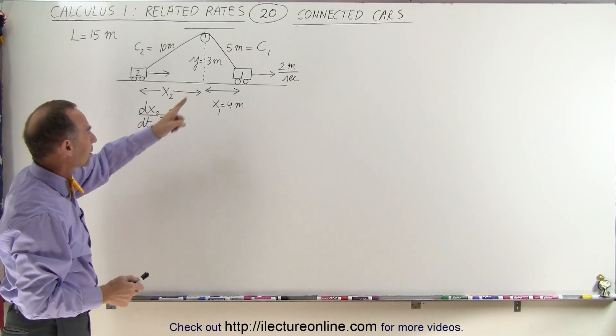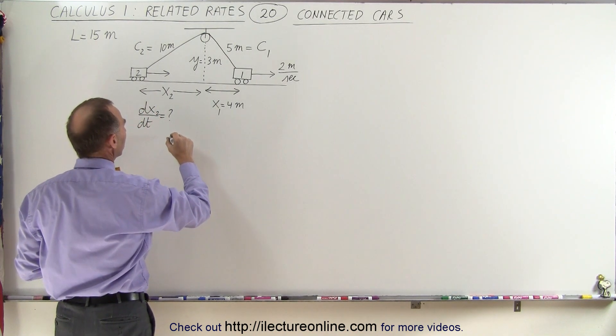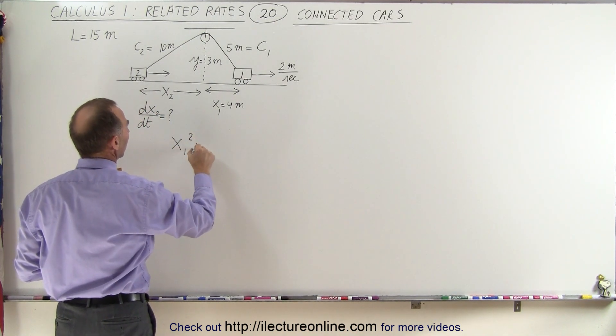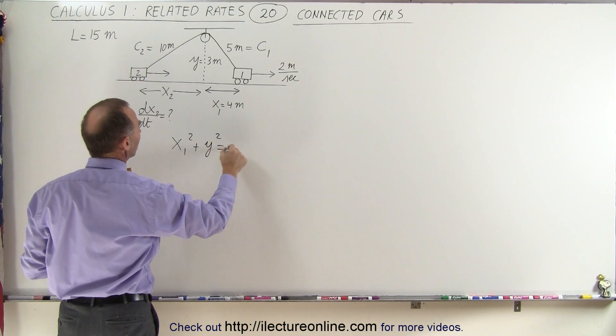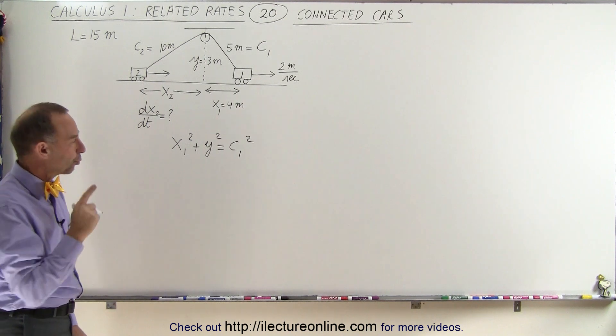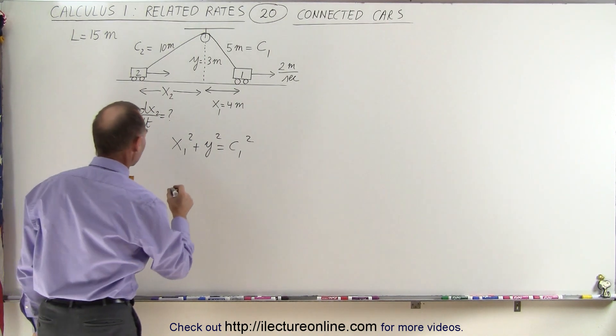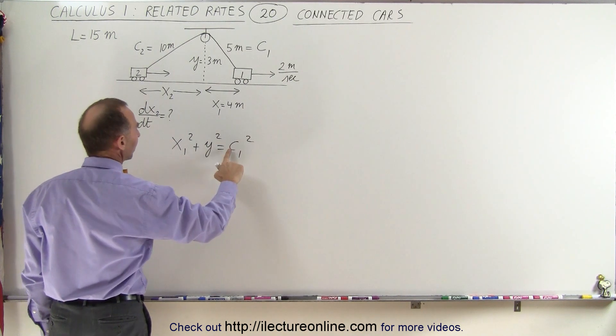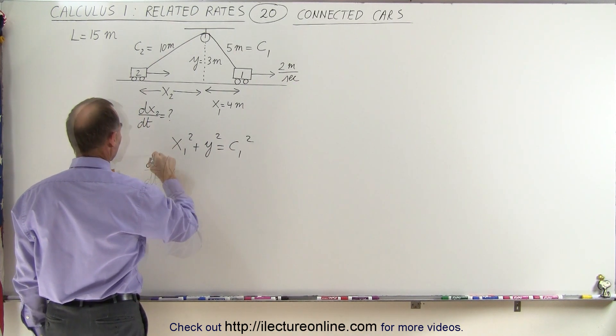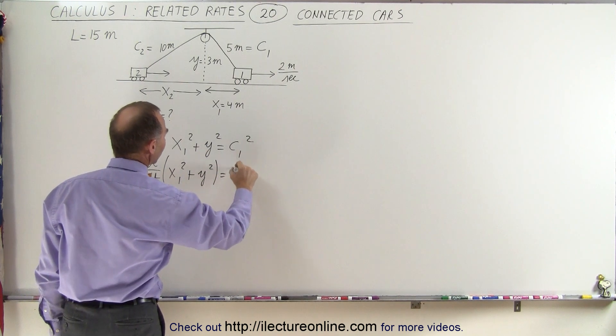Starting with the first triangle, what we can say is that x1 squared plus y squared equals c1 squared. If we now take the derivative of that with respect to time of both sides of the equation let's see what we get. So we're going to take the derivative of the left side and the d dt of the right side.